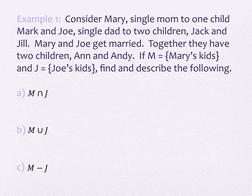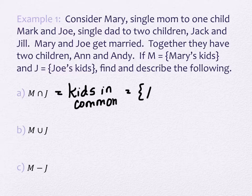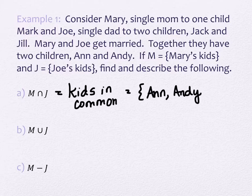We're going to find the following. What is the intersection of M and J? Ann and Andy. This would be Ann and Andy. So these are the kids they have in common. The ones that they had together after they got married is the description we have here. It's Ann and Andy.